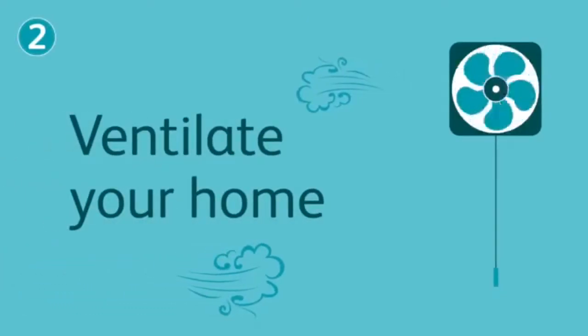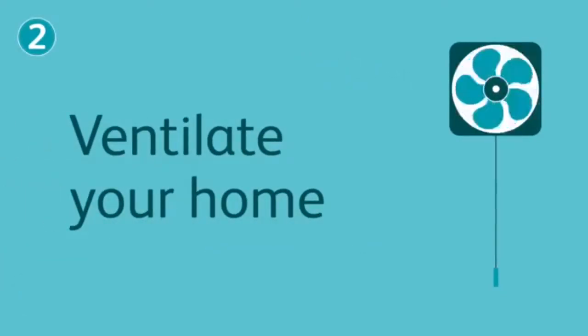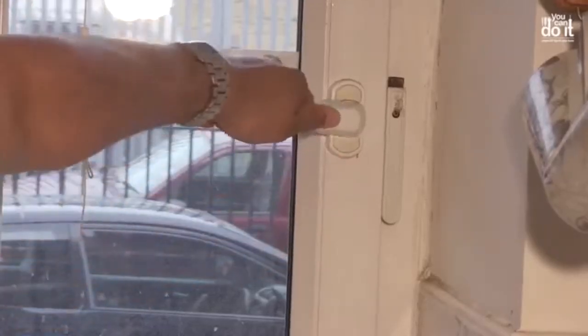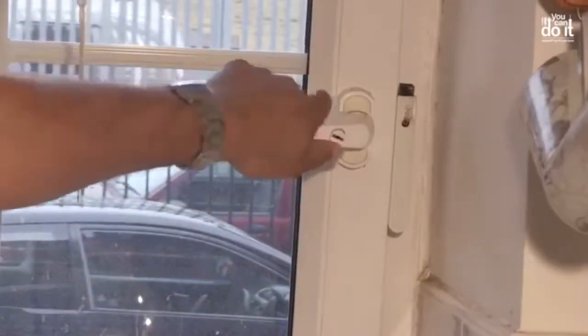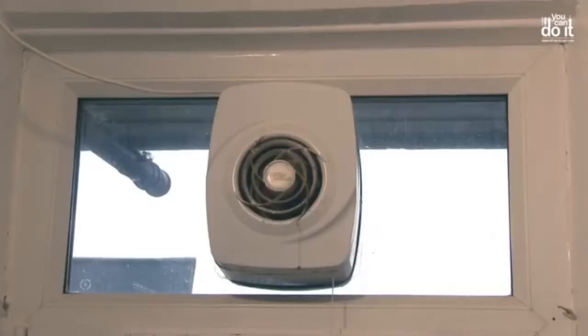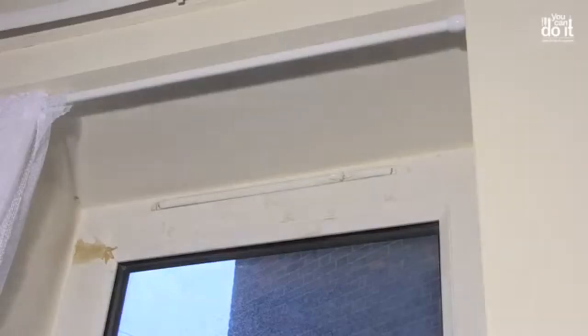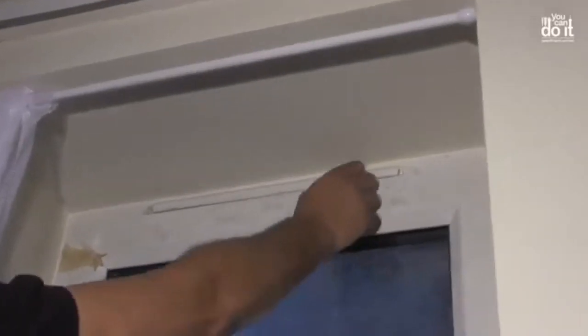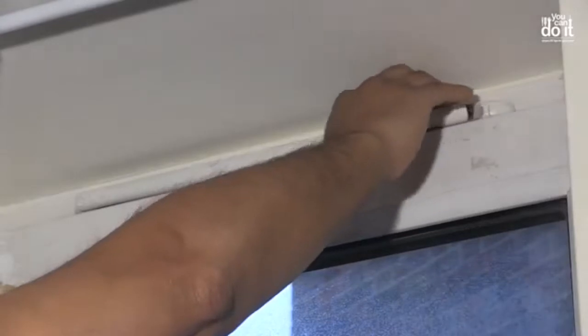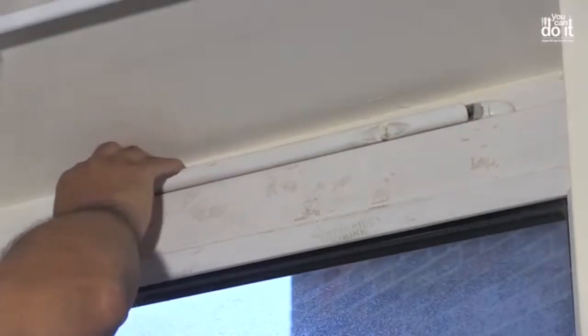Ventilate or air your home. To ventilate your home, open windows. Turn on extractor fans, especially when you are cooking, washing, or drying clothes. Open a window for a while each day, or use the trickle vents which are normally located above the window. Trickle vents can be opened by sliding or pulling the bar towards you. Once opened, you should be able to feel the airflow with your fingers.